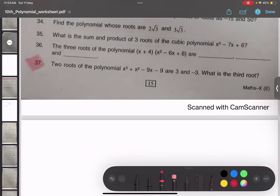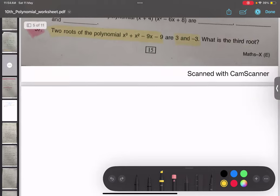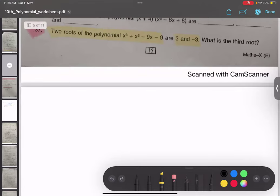Question number 37: two roots of the polynomial are given, find the third root. This is a very important question. You will find questions like this.